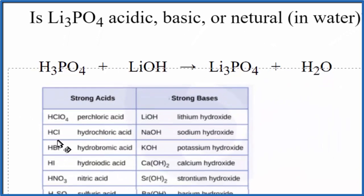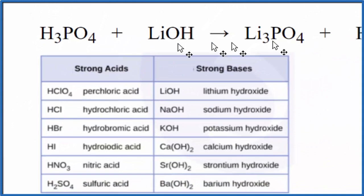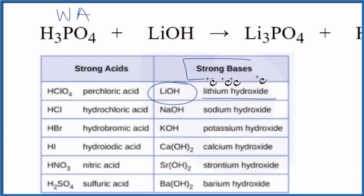So this is a really nice table to memorize. If we take a look at it, we're looking for phosphoric acid here, and it's not on the list of strong acids. That means it's going to be a weak acid. For lithium hydroxide, right here, lithium hydroxide, that is a strong base.